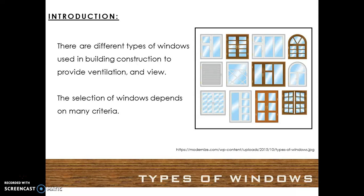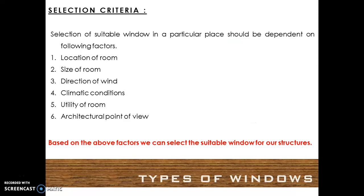There are different types of windows used in building construction to provide ventilation and view. The selection of windows depends on many criteria. The selection criteria for windows are: the suitable window for a particular place should depend on the following factors — location of room, size of room, direction of wind, climatic conditions, utility of room, and architectural point of view. Based on the above factors, we can select the suitable window for our structures.